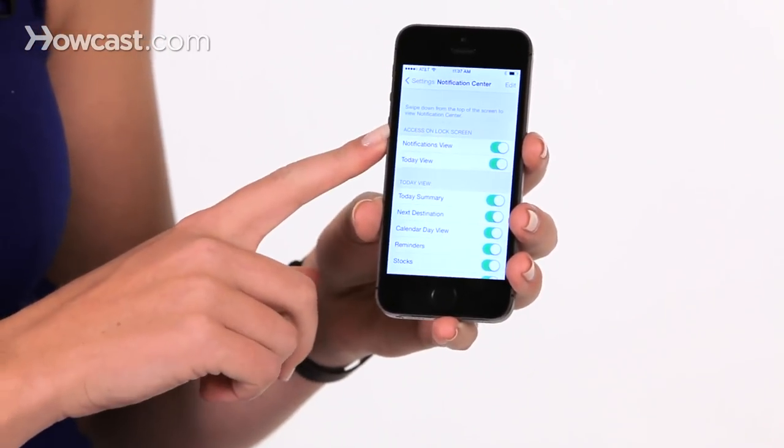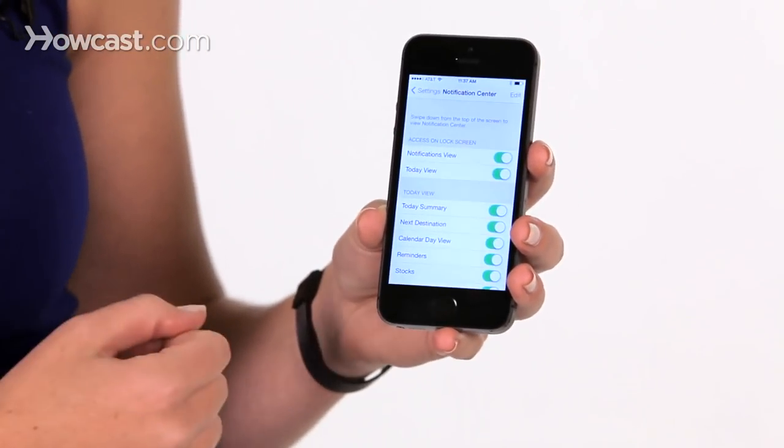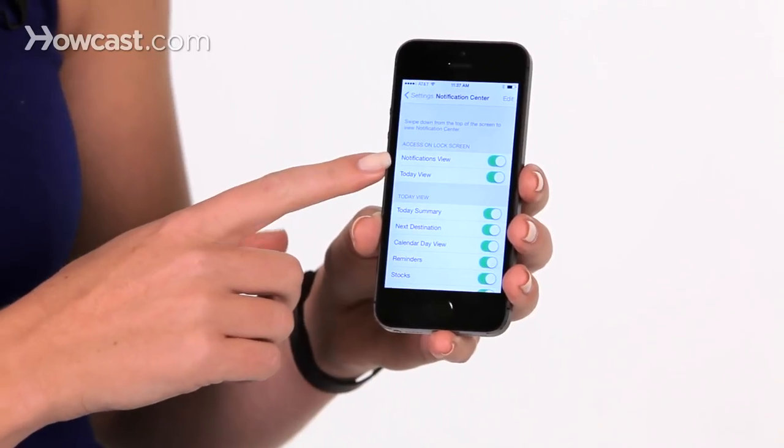From in here, the first thing we have is what you can access from the lock screen in the notification center. You can choose whether to allow your notifications to be viewed, and whether you can allow your schedule for today to be viewed.